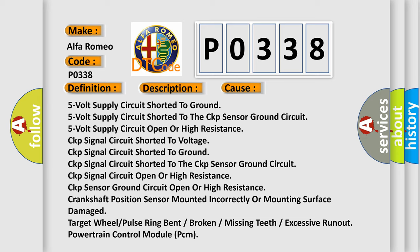CKP sensor ground circuit open or high resistance, Crankshaft Position Sensor mounted incorrectly or mounting surface damaged, target wheel pulse ring bent, broken, missing teeth, excessive run-out, or powertrain control module PCM issues.